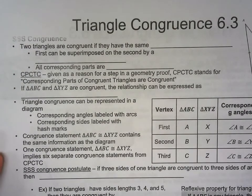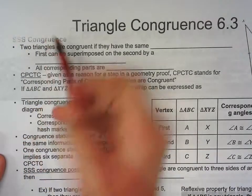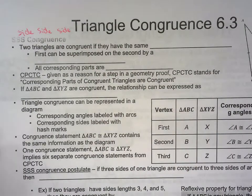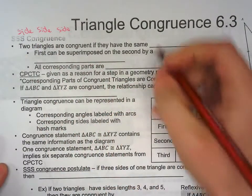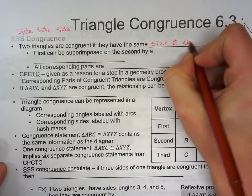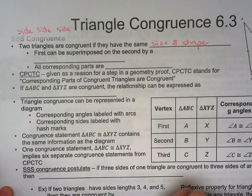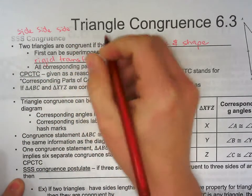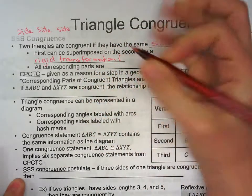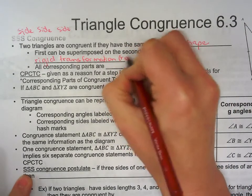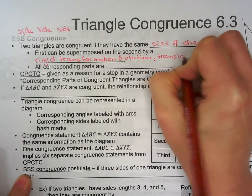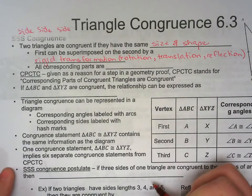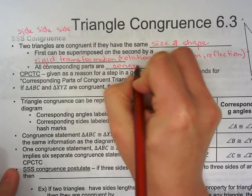We're doing triangles — triangle congruency 6.3. SSS stands for side-side-side, so that means if all three sides are the same, the triangles are congruent. Two triangles are congruent if they have the same size and shape, so the first can be superimposed on the second by a rigid transformation. There are three rigid transformations: rotation, translation (when you move side to side), and reflection, like a mirror.